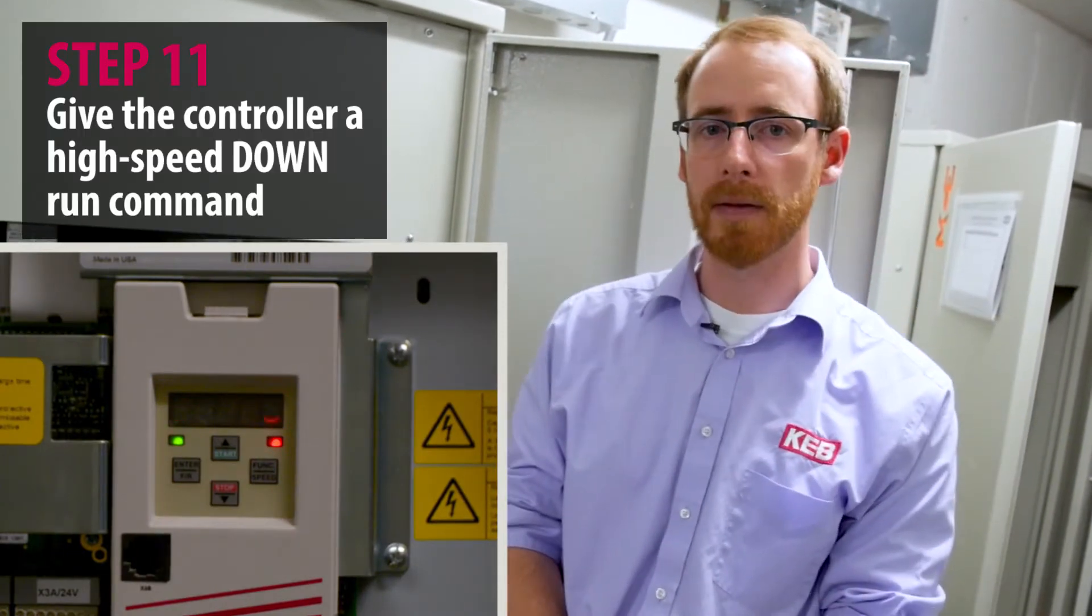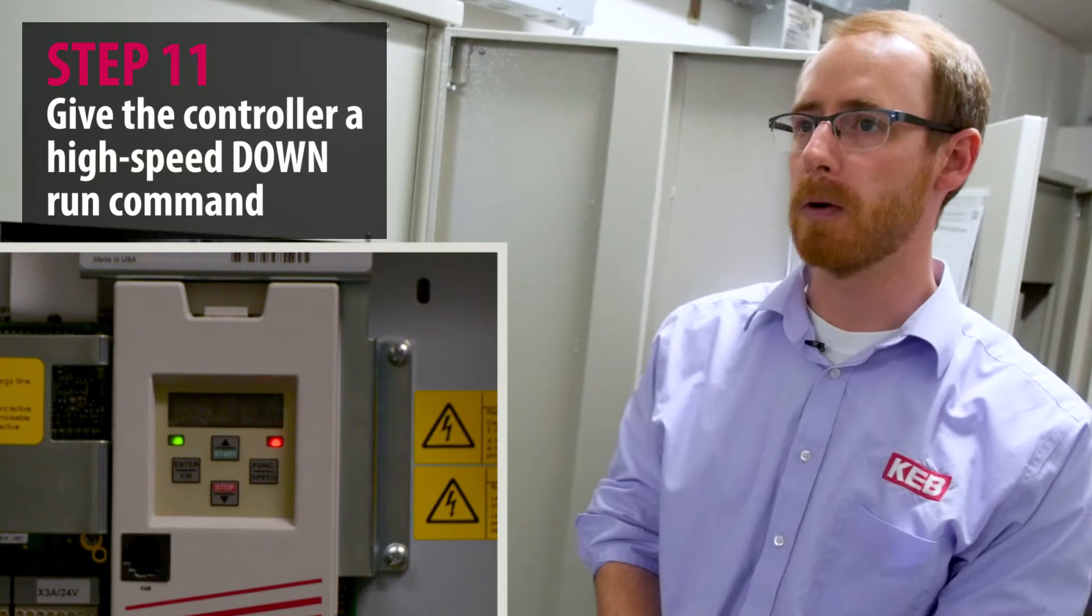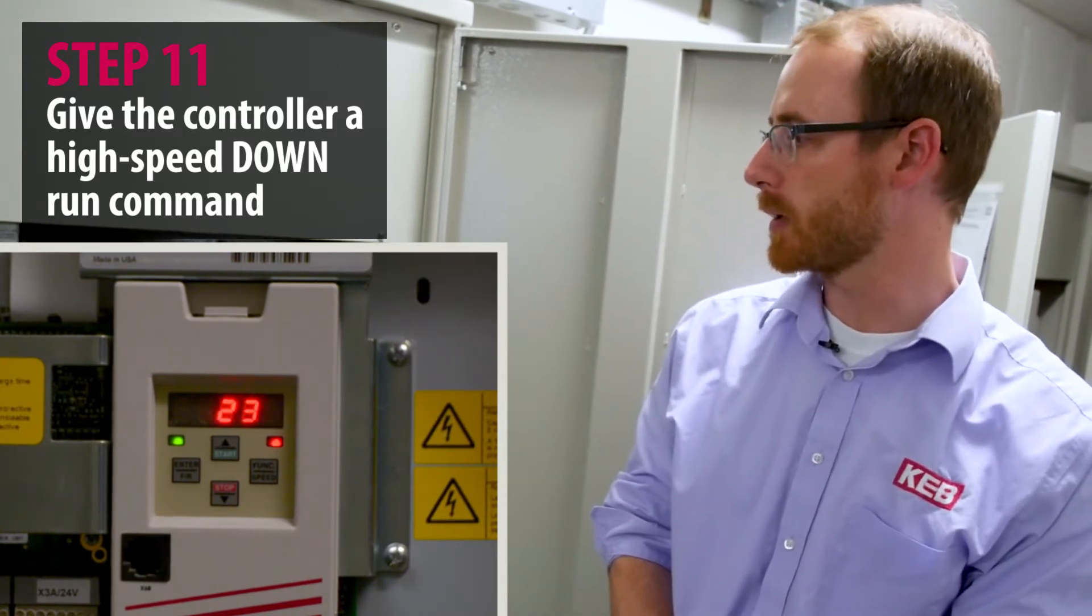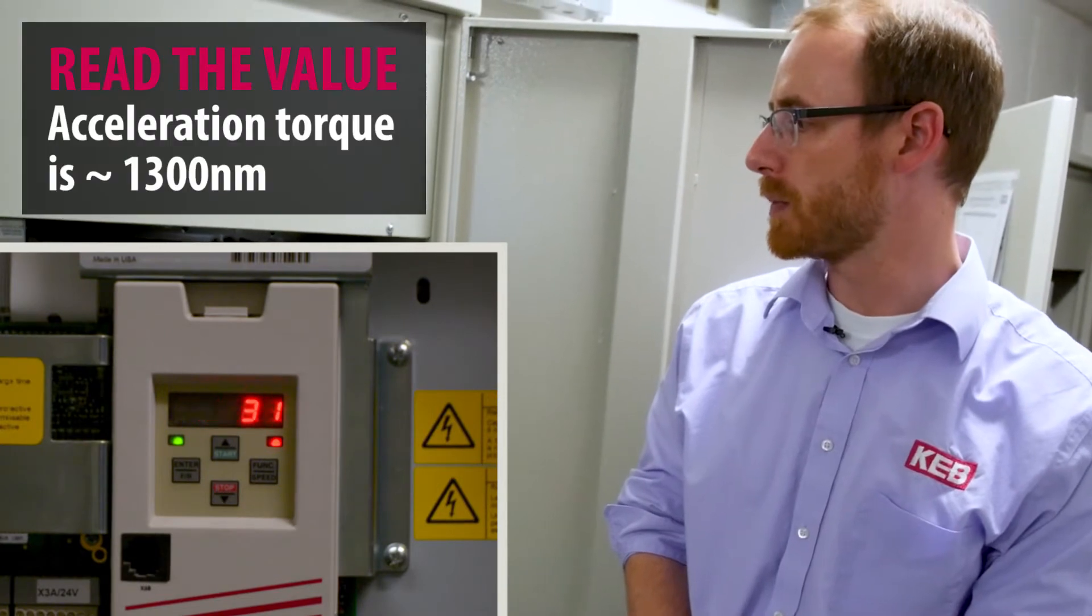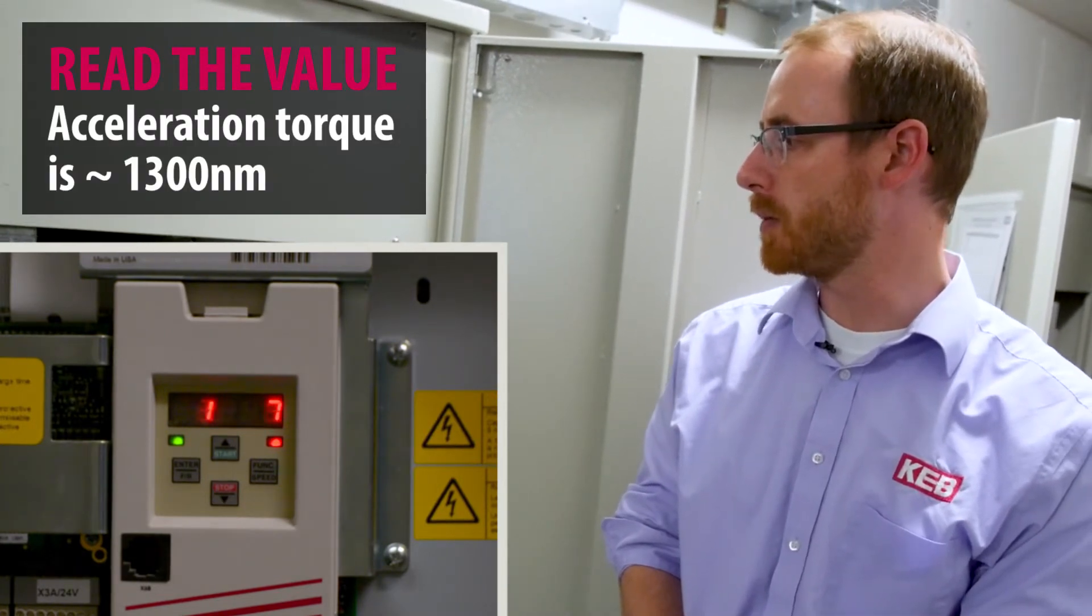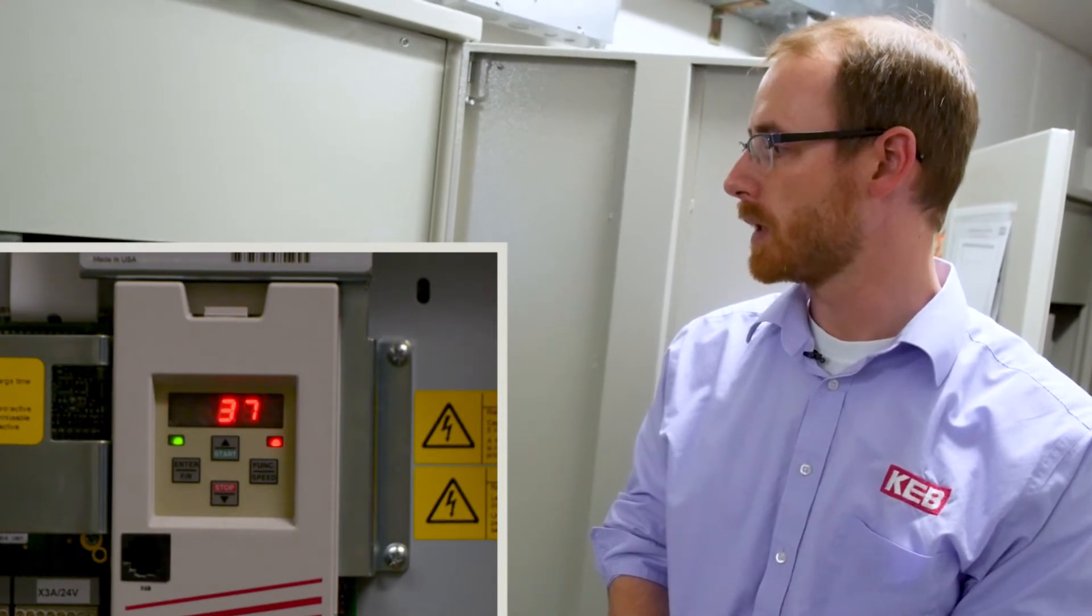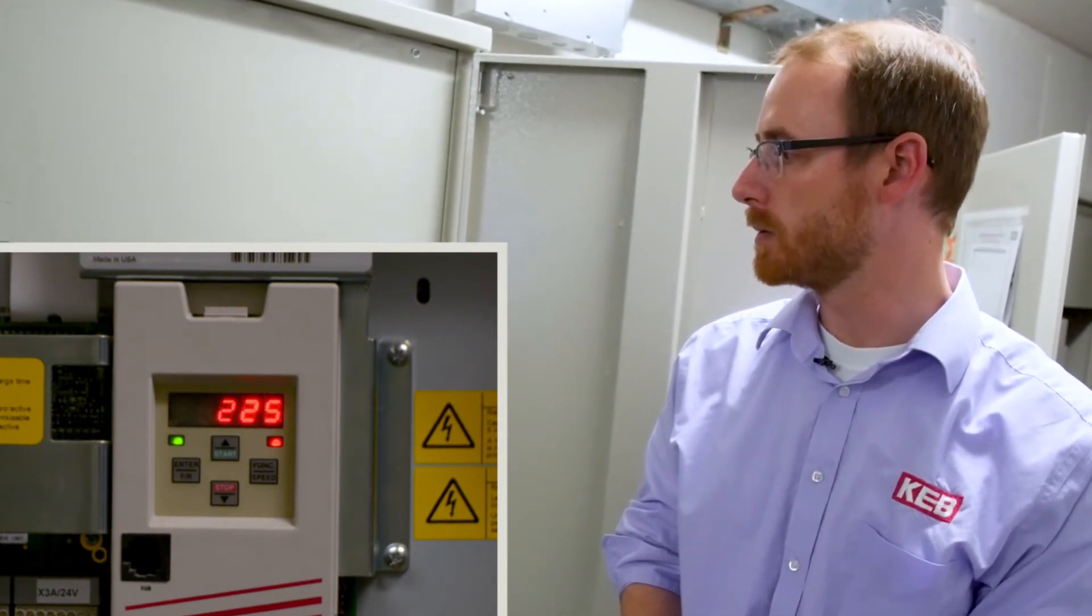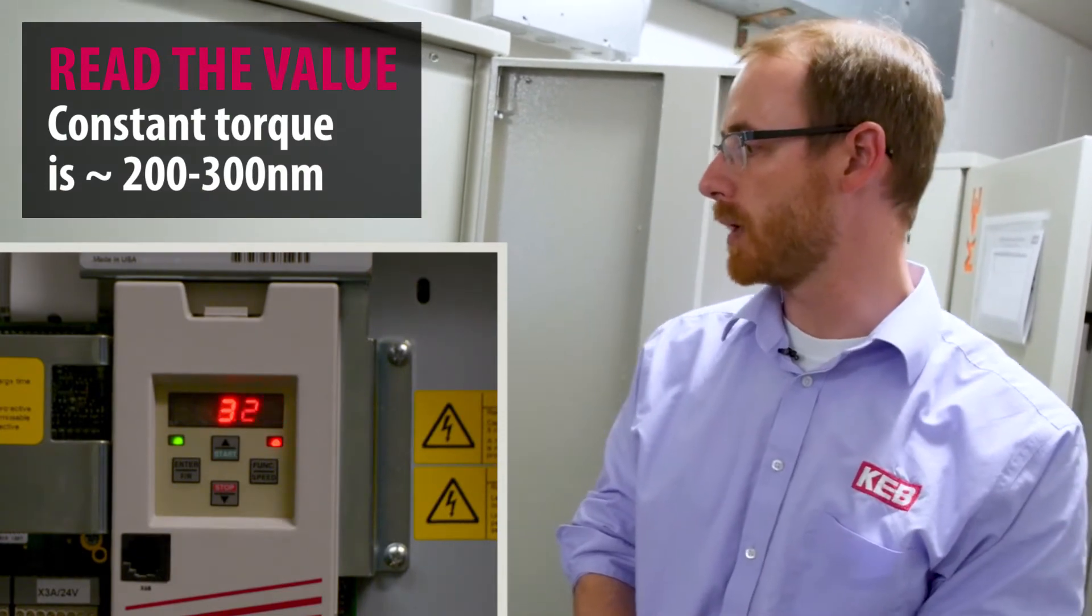Next we're going to run the elevator down in the down direction at high speed. And again we're going to look at the acceleration torque, which appears to be about 1300 newton meters again. And the torque at high speed, which is again between about 200 and 300 newton meters.